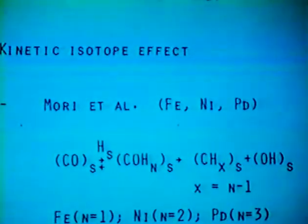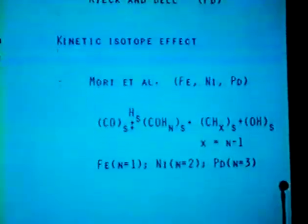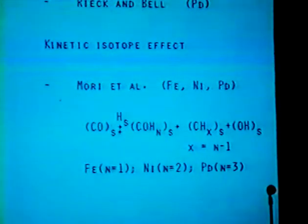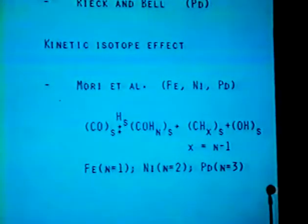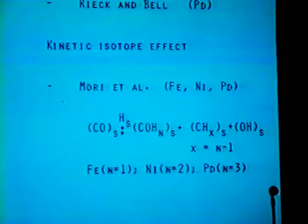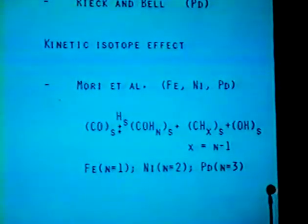Further evidence convincing us that hydrogen does participate in this important step comes from kinetic isotope effect studies done in Japan by Dr. Mori and his co-workers in Kyoto. They looked at CO hydrogenation on iron, nickel, and palladium. The experiments involved chemisorption of a small amount of CO on these supported catalysts and then hydrogenation as a function of time using either hydrogen or deuterium. The experimental quantity that was looked at was the hydrogen isotope effect, and that isotope effect was found to vary in a very systematic fashion as a function of the composition of the metal.